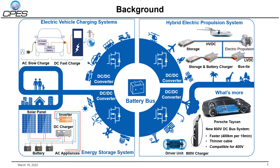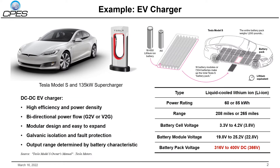The bidirectional DC-DC converter exists everywhere in our life and has been widely used in many applications, such as in EV charging systems, hybrid electric propulsion systems, or energy storage systems. An EV charger example was given in this page and the spec is shown on the right-hand side.